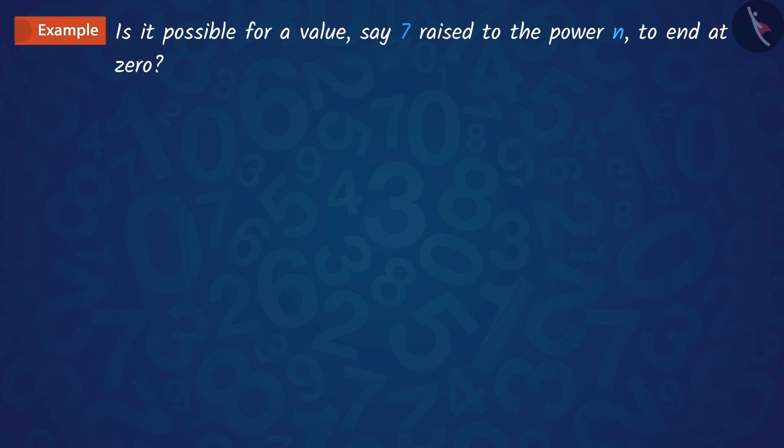Check whether there is any value of n for which 7 raised to the power n ends with digit 0. We know that if a number ends with 0, it will be divisible by 10.